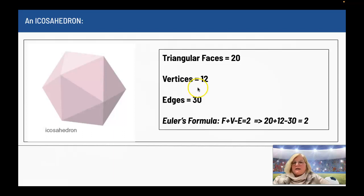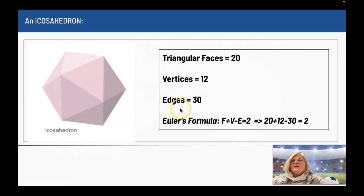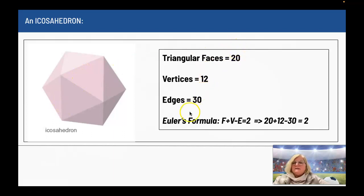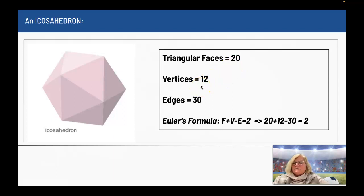The vertices are 12. The points where all the edges come together are the vertices, and there are 12 of them. There are 30 edges — three around each triangle, and there are 20 triangles, for a total of 30 edges. Euler's formula says the number of faces (20) plus the number of vertices (12) equals 32, minus the number of edges equals 2. So 32 minus 30 equals 2.